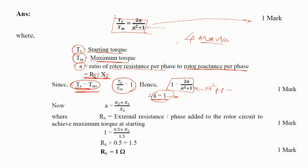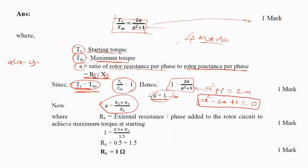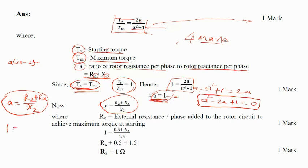The equation becomes a² + 1 = 2a, which gives a² − 2a + 1 = 0. This is a second-order quadratic equation that can be solved using a calculator. Now, since a = r2/x2, and we need to add some resistance rx in the rotor circuit to get maximum torque at starting, the new equation becomes: a = (r2 + rx) / x2. Since a = 1, we write 1 = (r2 + rx) / x2.